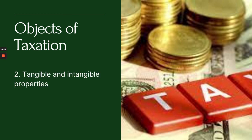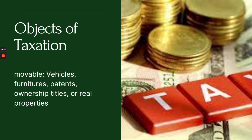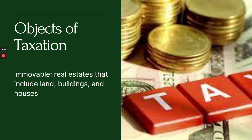The second object of taxation is tangible and intangible properties — personal properties, movable or immovable, are subject to taxation. Movable properties include vehicles, furniture, patents, and ownership titles. Immovable properties include real estates, land, buildings, and houses. All of these are taxable.